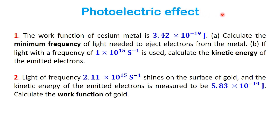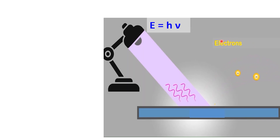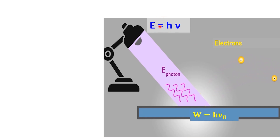Before we jump into the calculations, let's make sure we understand what's happening in the photoelectric effect. When light shines on the surface of certain metals, it can cause electrons to be ejected. These electrons are called photoelectrons. However, not all light can do this — the photons must have a frequency high enough to provide the energy needed to free the electrons.